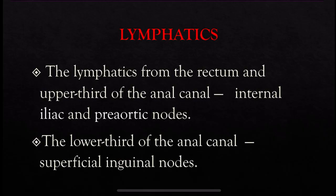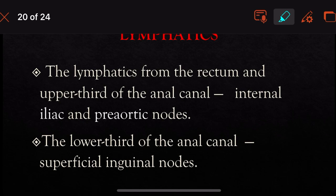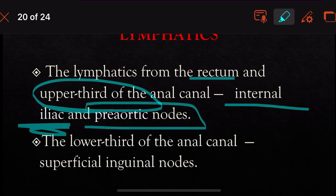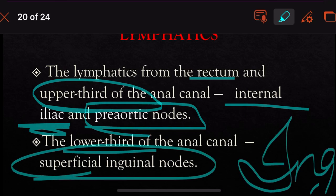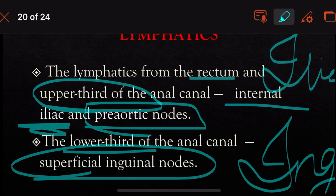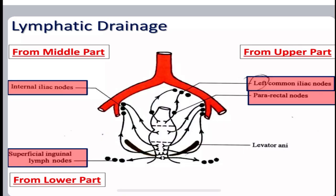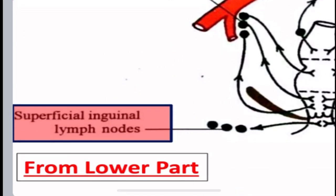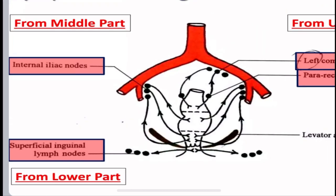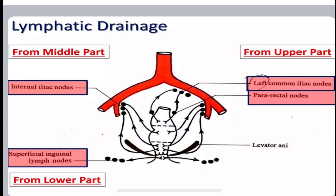For lymphatic drainage, the lymphatics from the rectum and the upper third of the anal canal drain into the internal iliac and pre-aortic nodes. The lower third of the anal canal drains into the superficial inguinal lymph nodes.